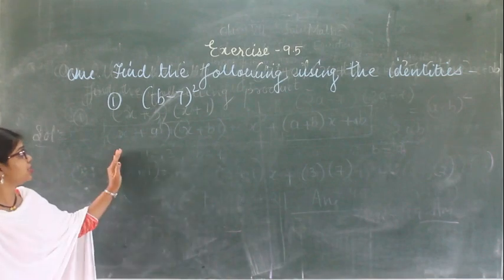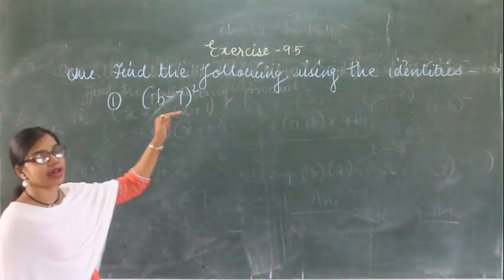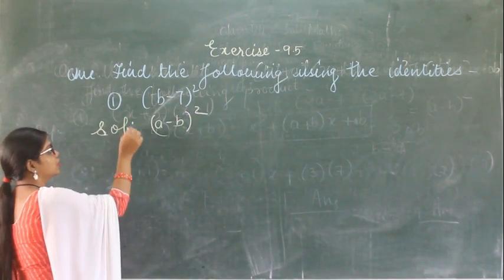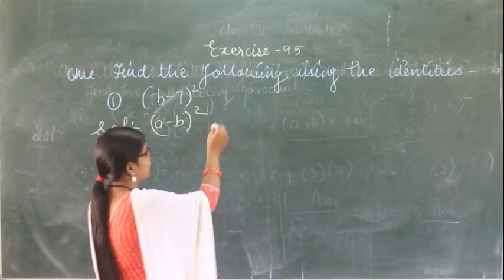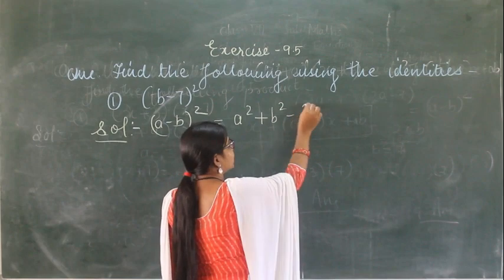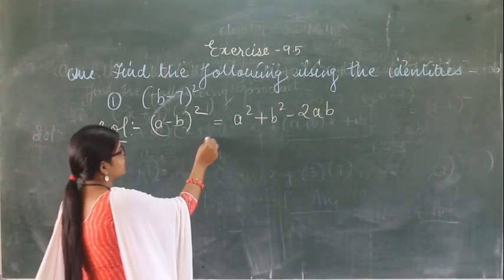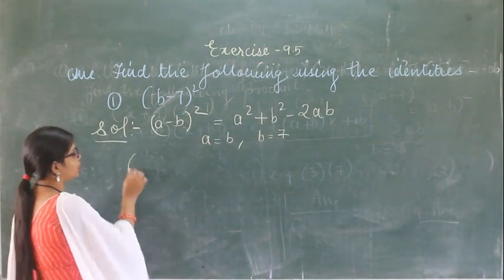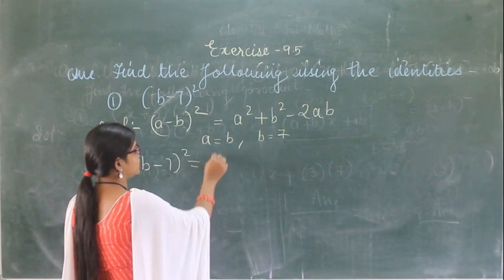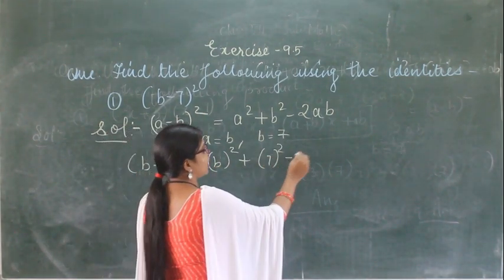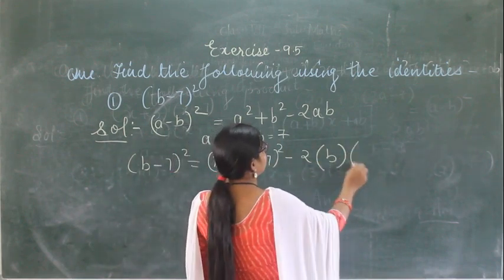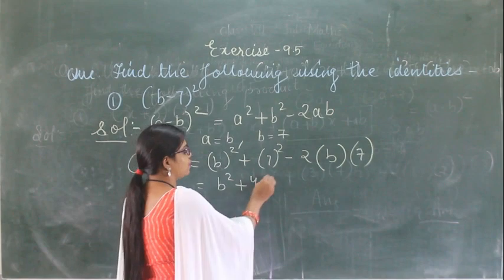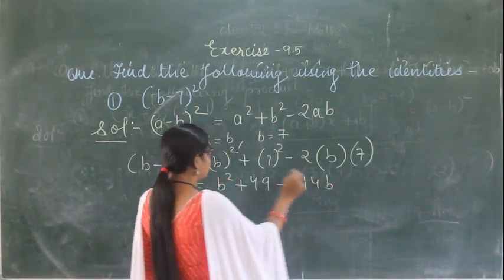This is question number 3. This question says find the value using identity: (b minus 7) whole square. I can write this as (a minus b) whole square. The formula is a square plus b square minus 2 into a into b. Here a is equal to b and b is equal to 7. Substituting: b square plus 7 square minus 2 into b into 7, giving b square plus 49 minus 14b. This is the answer.